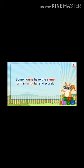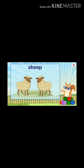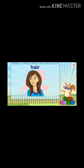Some nouns have the same form in both singular and plural. For example, the plural of 'sheep' is 'sheep', not 'sheeps'. The plural of 'hair' is 'hair', not 'hairs', because hair is uncountable — we cannot count hair. Similarly, 'bison' stays 'bison' and 'fish' stays 'fish'.